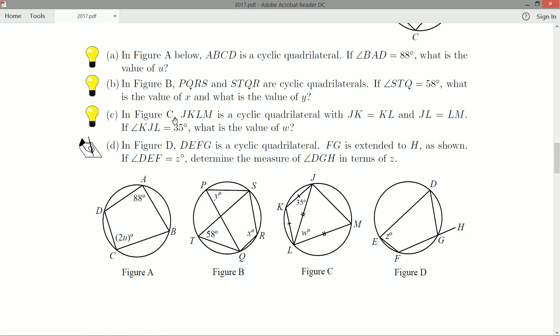Part B: in figure B we've got PQRS and STQR are cyclic quadrilaterals. If angle STQ is 58 degrees, what is the value of x and y? I notice x is at angle SRQ which is opposite of STQ, so those add up to 180 degrees. Then y is also going to be 58 degrees. You can see that because it's another cyclic quadrilateral here, or you could say both angles SPQ and STQ subtend to the same chord which is SQ, and inside a circle angles subtended by the same chord are equal.